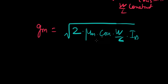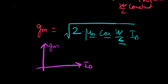But if you were to analyze this equation what do you see? Mu N is constant, C ox is constant, W over L is constant again. And if you had to plot this on a graph what would you get? You would get GM versus ID graph correct.